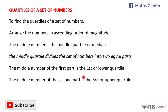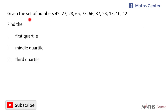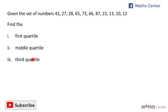Let's apply this to solve some questions. Given the set of numbers 42, 27, 28, 65, 73, 66, 87, 23, 13, 10, 12, find the first quartile, the middle quartile and the third quartile.